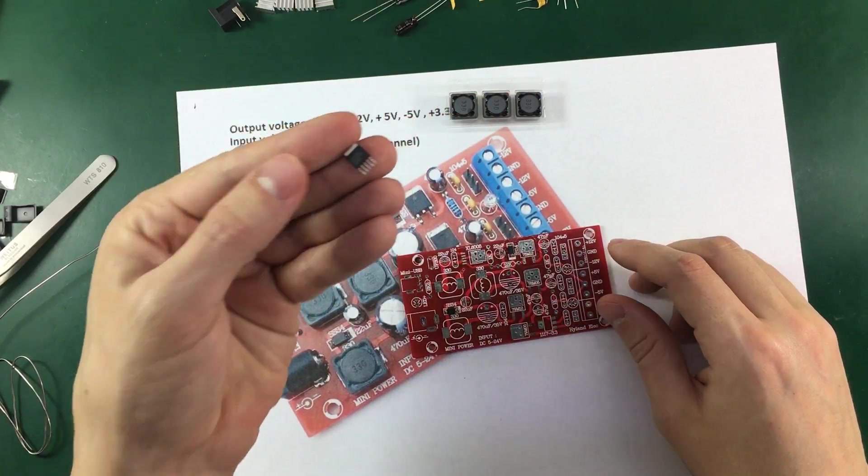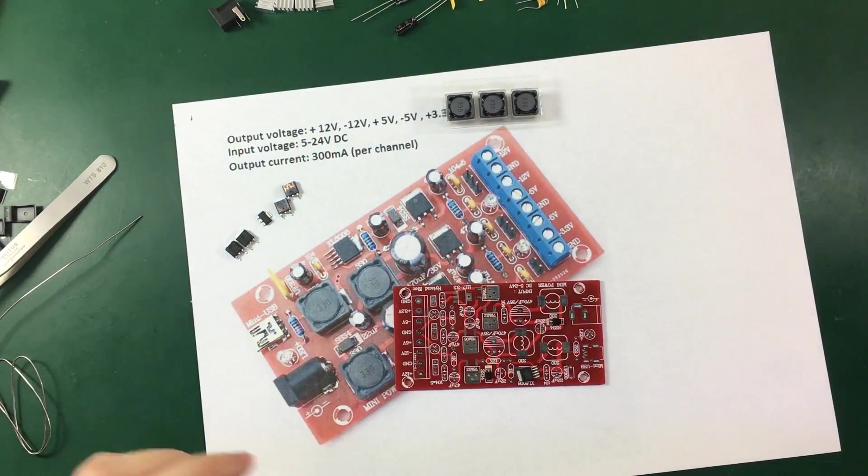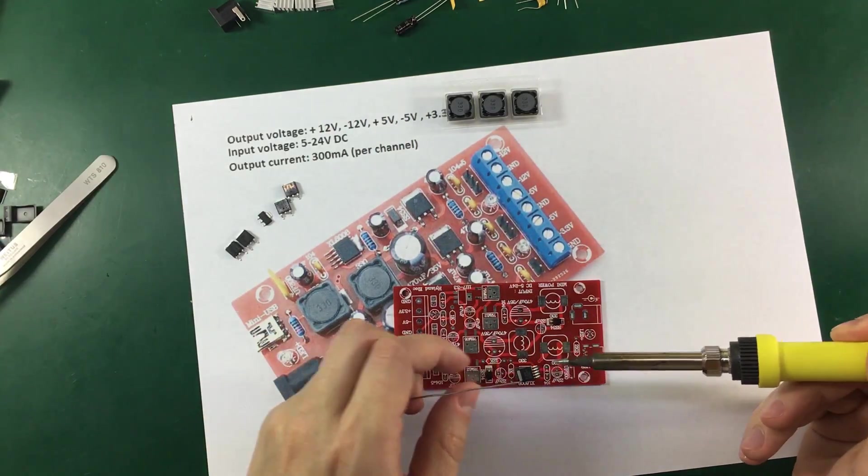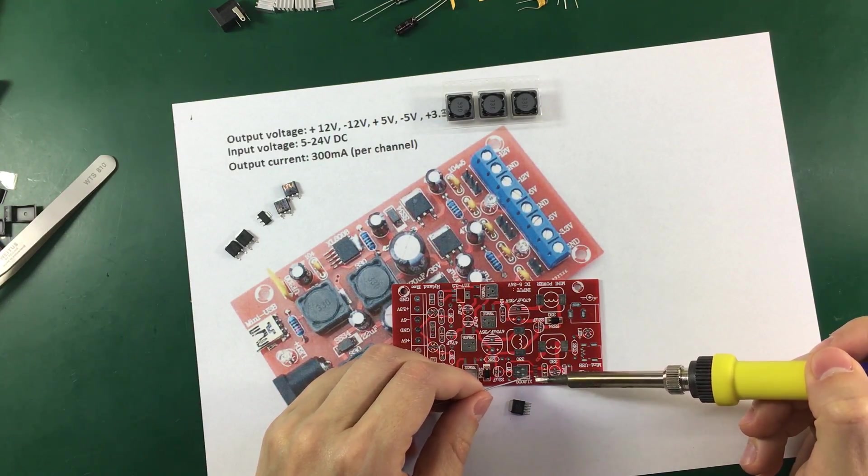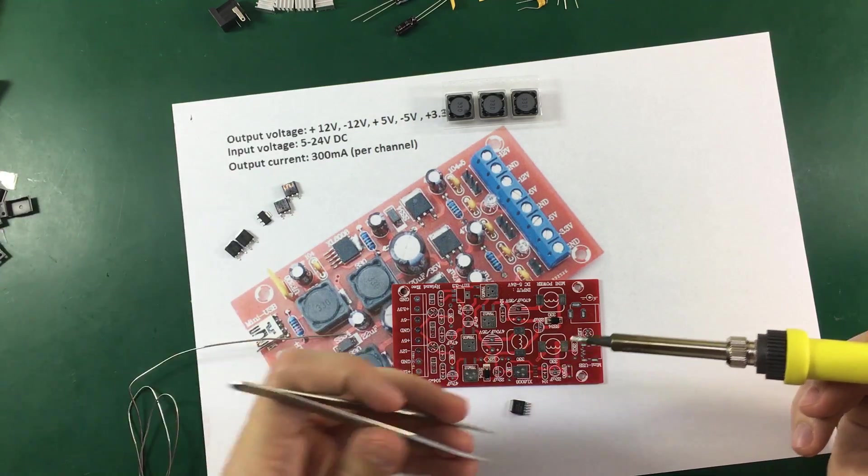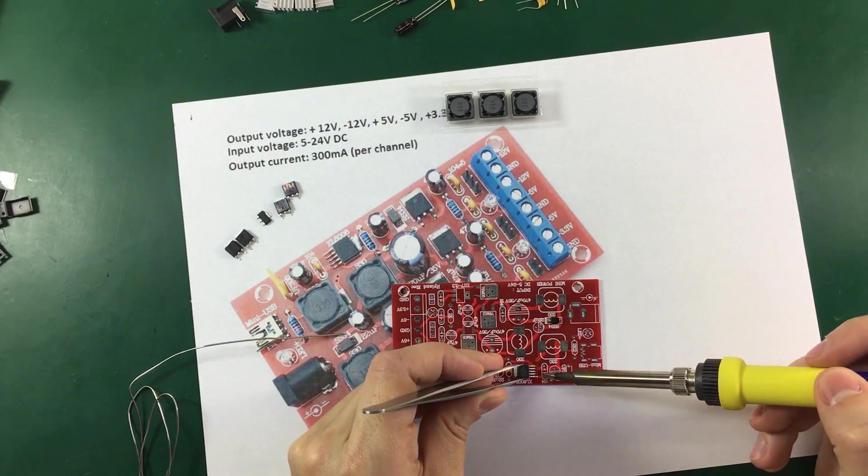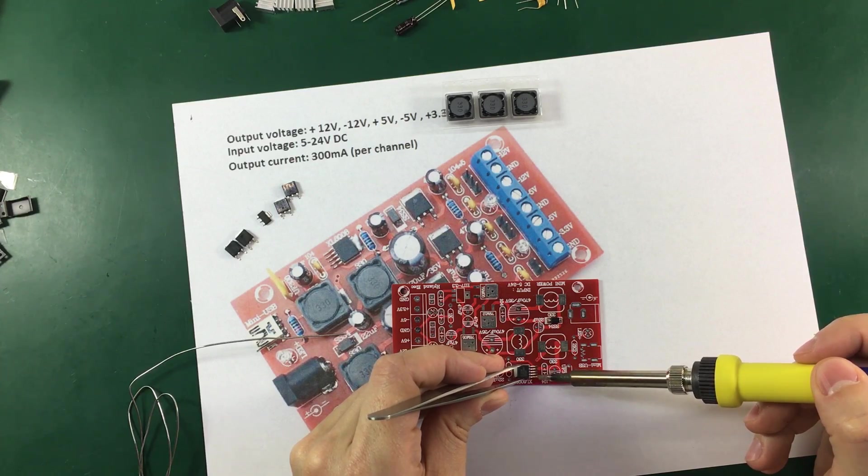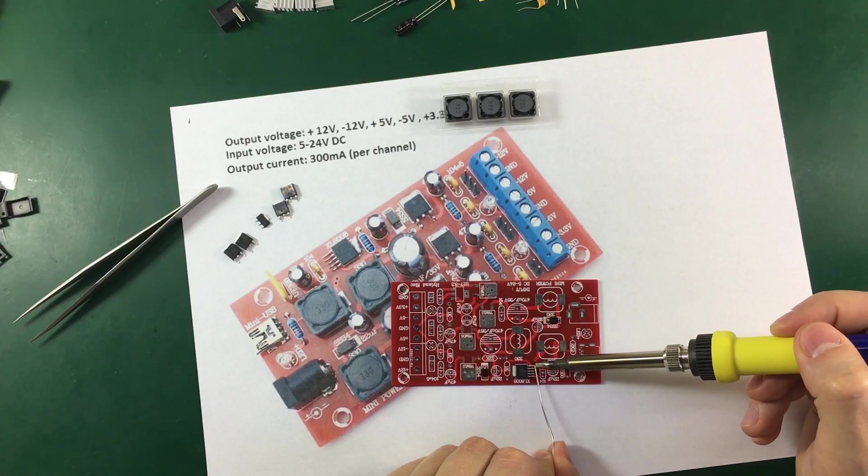Next up I'm going to solder this switching regulator. I'm going to start with the small individual pins. Same way I'm going to apply a bit of solder to one of the pins. Now all I have to do is continue with the rest of the pins.